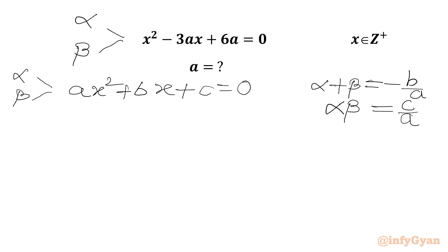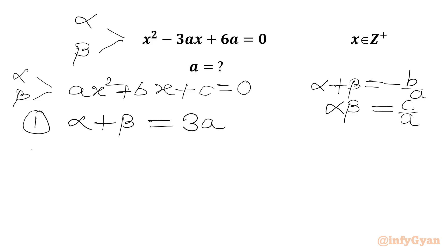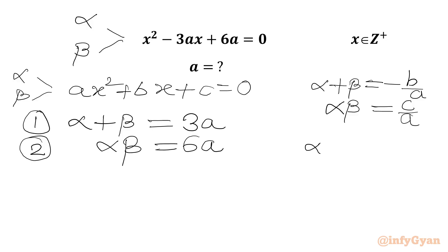For our quadratic equation I can write two equations. First, for sum of roots: alpha + beta = -b/a = minus coefficient of x over coefficient of x², which gives 3a. Second equation: product of roots = c/a = constant over coefficient of x² = 6a. So alpha + beta = 3a and alpha·beta = 6a.